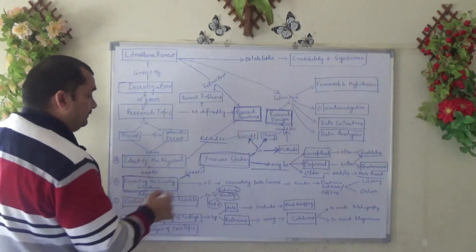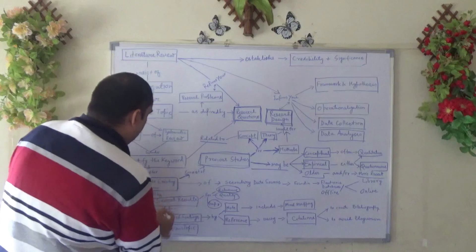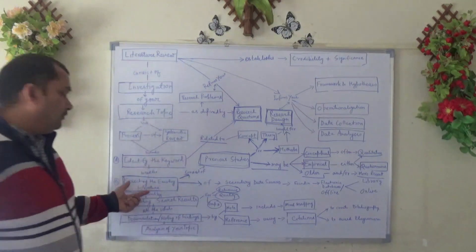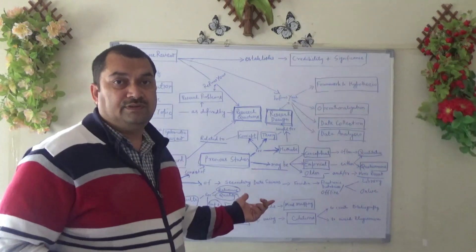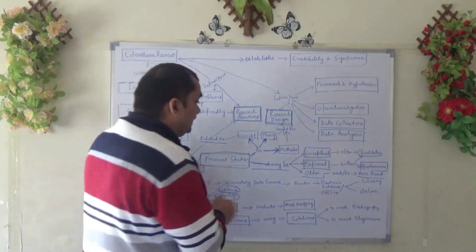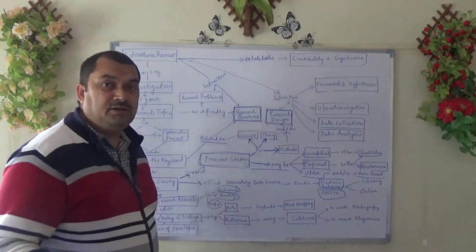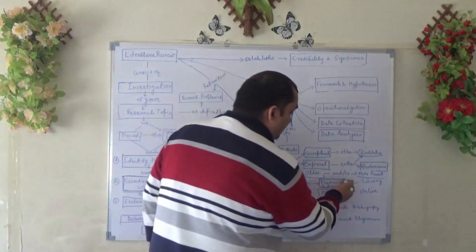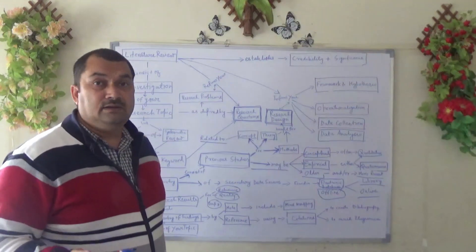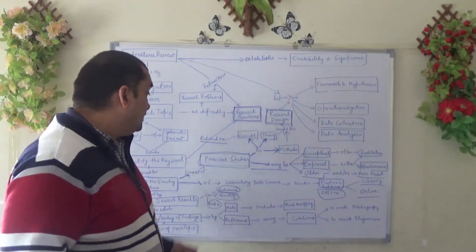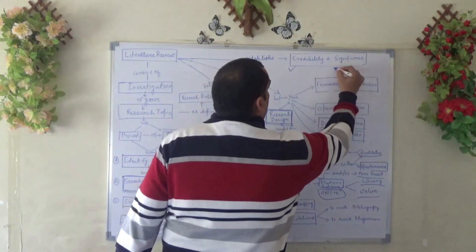Before moving to evaluation, the question is: how do we get the data when we start the literature search? Generally it is secondary data sources in nature, and we get it either in electronic database format or offline — it may be available in print copy, bound volumes, or online in electronic databases. We get it either in the library or online. Most libraries, Google, or other search engines provide a large number of sources, but we have to ensure that the information is credible and significant to our research.